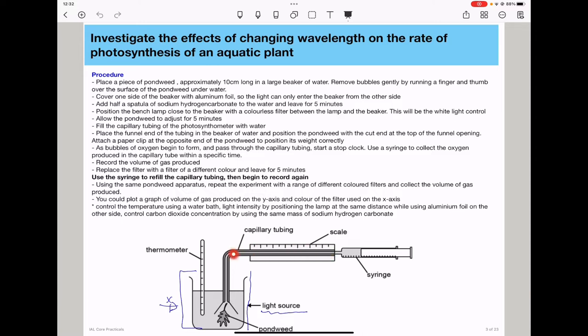Water has to be filled in here so that as the oxygen is produced, it comes into the capillary tubing and there will be some displacement of the water. Then place the final end of the tubing in a beaker of water and position the pondweed with a cut end at the top of the funnel opening. This will ensure that all the oxygen produced at this point comes directly into the capillary tubing so that we do not lose any volume of gas, and that means our experiment is going to give us better results.